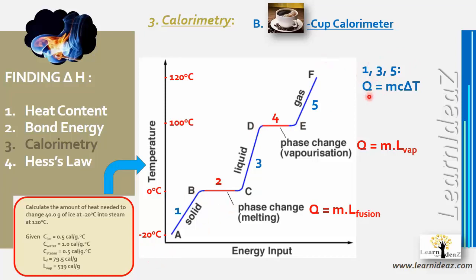In steps 1, 3, and 5 (temperature change only), use q = mc × delta t. In step 2 (melting), use q = m × L_f. In step 4 (vaporization), use q = m × L_v. The total heat is the sum of all five steps.